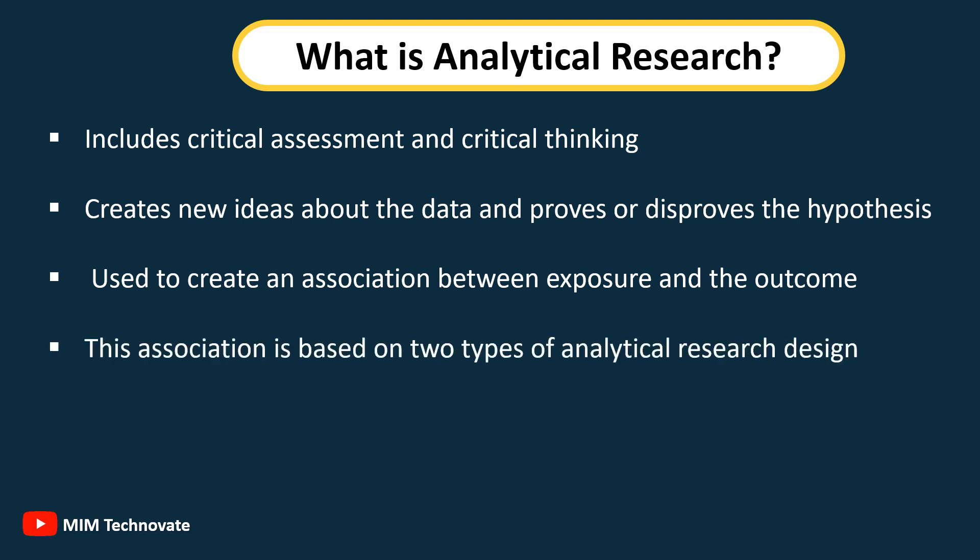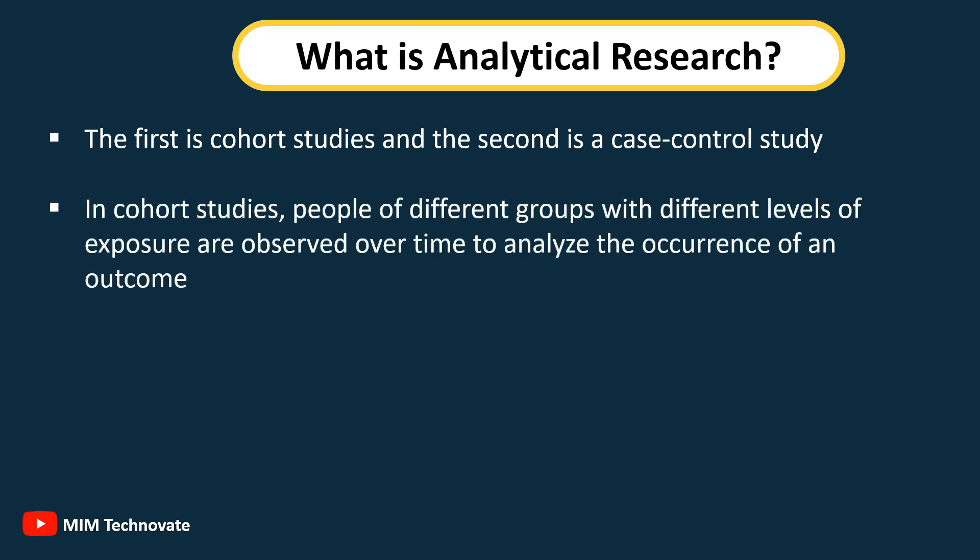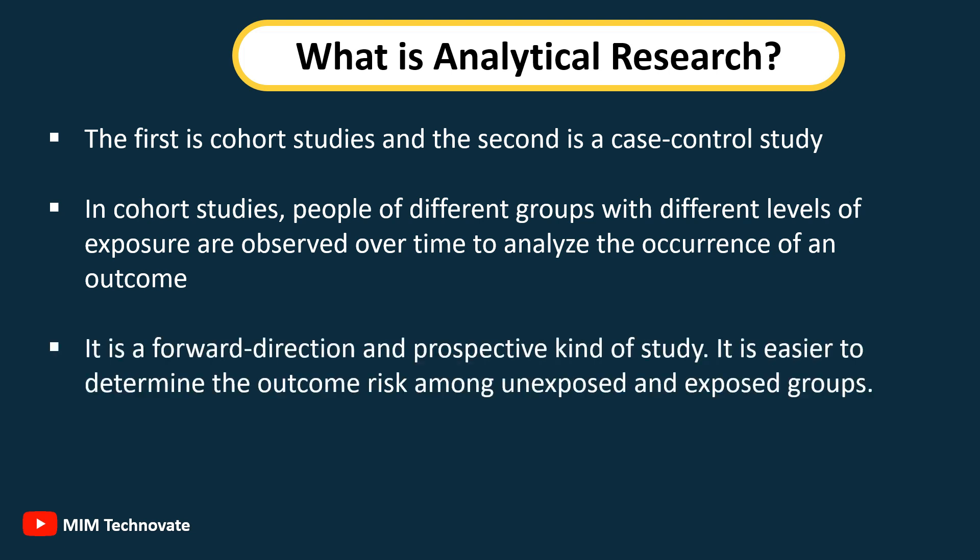This association is based on two types of analytical research design. The first is cohort studies, and the second is a case control study. In cohort studies, people of different groups with different levels of exposure are observed over time to analyze the occurrence of an outcome. It is a forward direction and prospective kind of study, and it is easier to determine the outcome risk among unexposed and exposed groups.